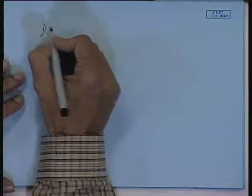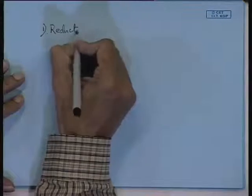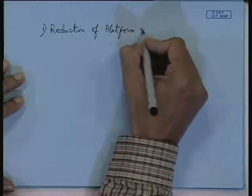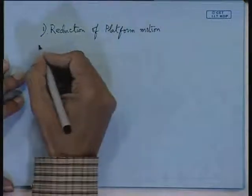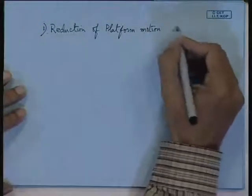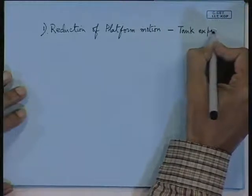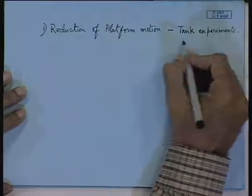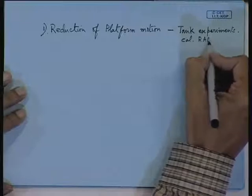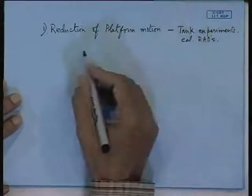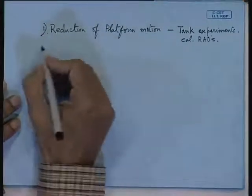The first guiding principle is reduction of platform motions. In ocean engineering, motion calculation is very important. This has to be confirmed from tank experiments. In tank experiments you calculate heave, pitch, and roll motions. These have to be found out from tank experiments — in sea keeping basins you can do that.